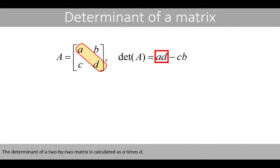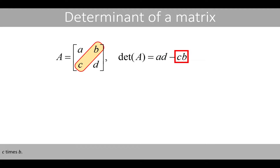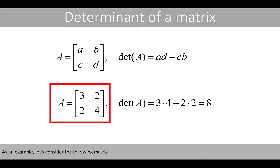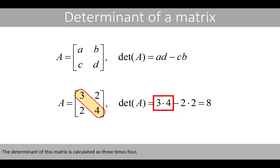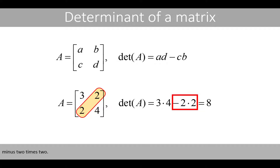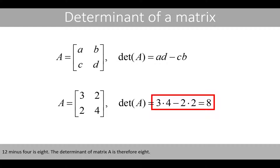The determinant of a 2 by 2 matrix is calculated as A times D minus C times B. As an example, let's consider the following matrix. The determinant of this matrix is calculated as 3 times 4 minus 2 times 2. 12 minus 4 is 8, so the determinant of matrix A is therefore 8.